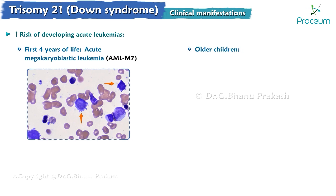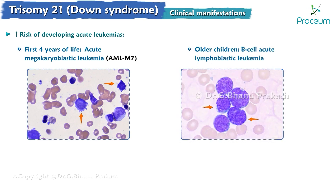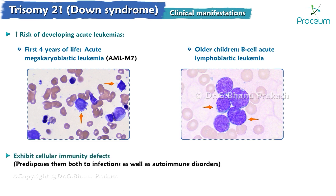In older children, B-cell acute lymphoblastic leukemia is more common. Patients with Down syndrome also exhibit cellular immunity defects, which predispose them both to infections as well as autoimmune disorders.